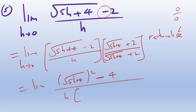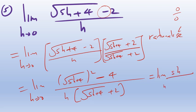At the bottom we have h times (√(5h + 4) + 2). The top simplifies: (5h + 4) − 4 = 5h, so the h cancels with the h in the denominator. That removes the singularity. Substituting h = 0 gives √4 = 2 in the denominator, so 2 + 2 = 4. The answer is 5 over 4 — a beautiful, finite, pretty number.